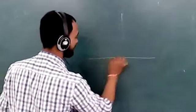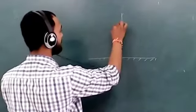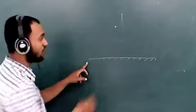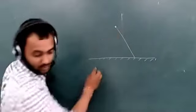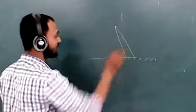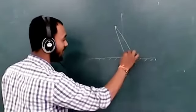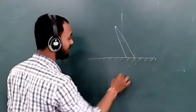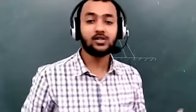Suppose this is a plane mirror, and an object is kept here. This is the coated surface and this is the reflecting surface. A light ray will pass and fall on the reflecting surface. It will reflect at the same angle — this is the angle of incidence — and the image is formed here. Now I will tell you the properties and characteristics of the image formed by a plane mirror.